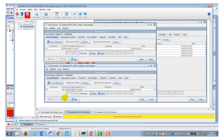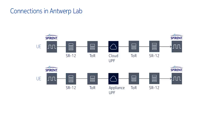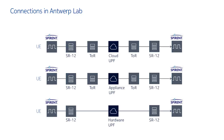To understand the delay, we need to know more details about the network architecture. In the middle we have the cloud user plane function running on OpenStack. At the left side we have the UE connected to a router, an SR12. That router is connected to a top-of-rack switch, and from the top-of-rack switch the packet can be sent to the user plane function. The user plane function processes the packet and sends it back through the top-of-rack switch, back to the router, and then back to Spirent Landslide. The measured delay includes traversal of the packet two times through a router, two times through a top-of-rack switch, and one time through the user plane function. The appliance topology is similar, and the hardware user plane topology is also similar except it does not have the top-of-rack switch.